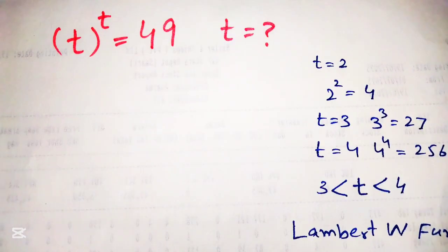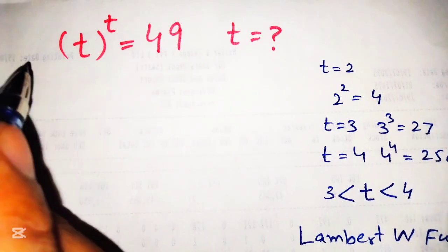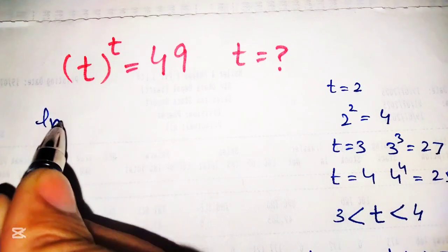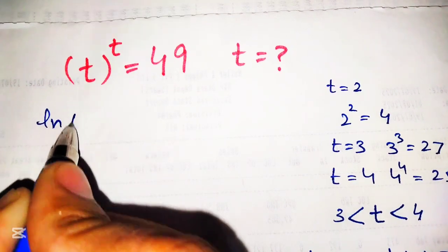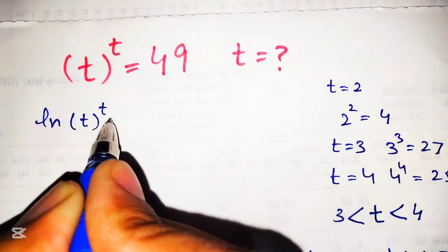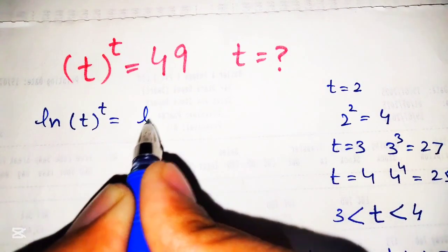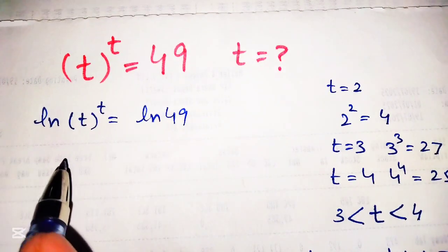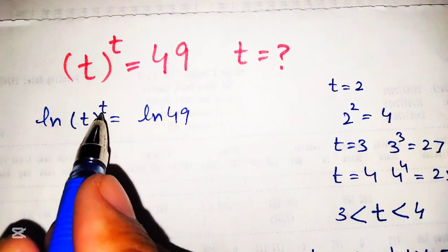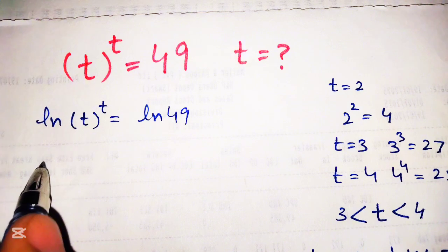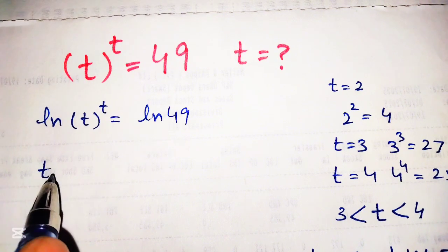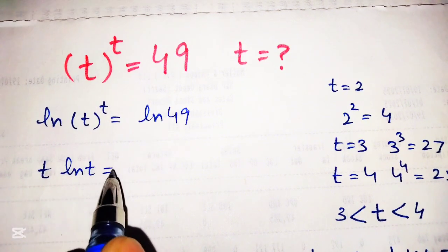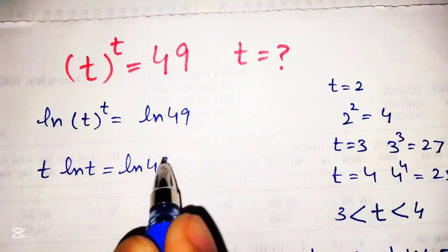For this purpose we take the natural log on both sides, giving us natural log of t raised to the power t equals natural log of 49. Using the log power property, we bring t to the front: t times natural log of t equals natural log of 49.